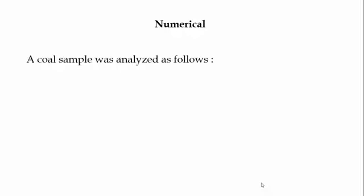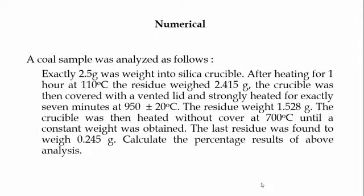Now let us understand the concept by taking a numerical example. A coal sample was analyzed as follows: exactly 2.5 grams was weighed into a silica crucible. After heating for one hour at 110 degrees Celsius, the residue weighed 2.415 grams. The crucible was then covered with a vented lid and strongly heated for exactly seven minutes at 950 degrees Celsius; the residue weighed 1.528 grams. The crucible was then heated without cover at 700 degrees Celsius until constant weight; the last residue was found to weigh 0.245 grams.